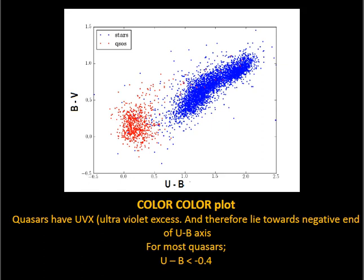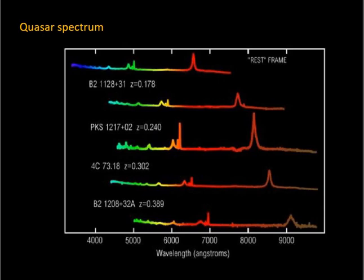For every quasar candidate, their spectrum is then studied in order to study the spectrum in detail and also to evaluate distances. As you can see, the first spectrum in the image is a nearby quasar, which is a model spectrum of the sun. The other spectrums are of real sources redshifted because the quasar is far off.